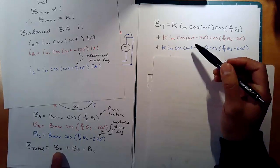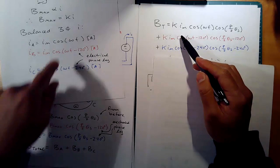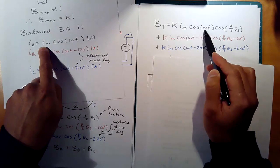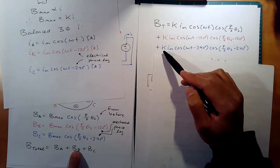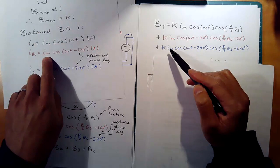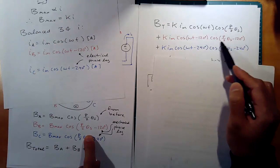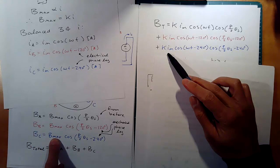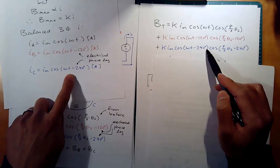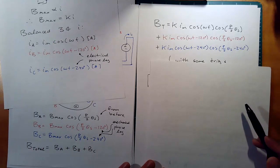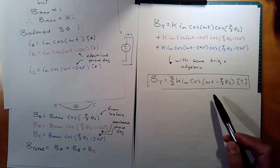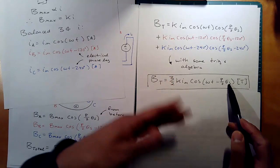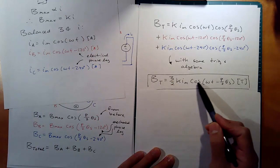Putting it all together: B_total = B_A + B_B + B_C. B_A = K * I_a * cos(p/2 * θ_s). B_B = K * I_b * cos(p/2 * θ_s - 120°), which is K * I_m * cos(ωt - 120°) * cos(p/2 * θ_s - 120°). B_C = K * I_m * cos(ωt - 240°) * cos(p/2 * θ_s - 240°). With some trig and algebra, this reduces to the clean equation: B_total = (3/2) * K * I_m * cos(ωt - p/2 * θ_s). This is the same equation shown on the first slide.